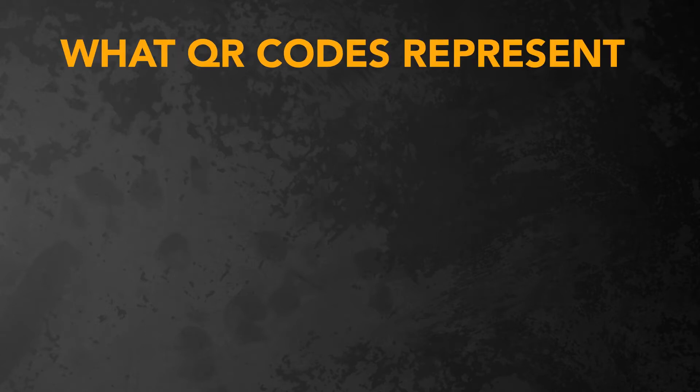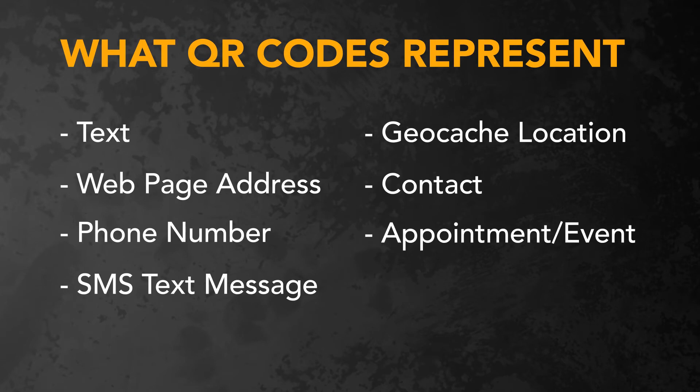QR codes can represent many different things. For example, a QR code can represent a few sentences of text, a web page address, a phone number, an SMS text message, a geocache location, a contact from your contact book, or even an appointment from your calendar. The sky is really the limit on what QR codes can be used for.